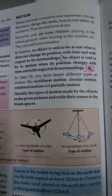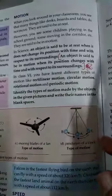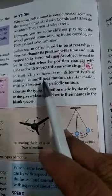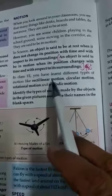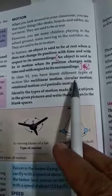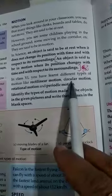Aap logo ne yeh sare motion padhe the. Rectilinear motion: jab koi cheez seedhe mein chalti hai, ek line mein chalti hai, woh kehlata hai rectilinear motion, jaise ki koi cycle chala raha hai ek straight road per. Circular motion ka matlab hai, jaise koi cheez circular motion mein hai, jaise koi cycle ka wheel ho, ya car ka wheel ho, wheel hamesha circular motion hota hai.